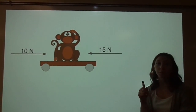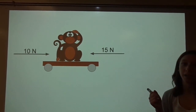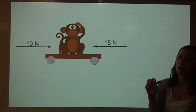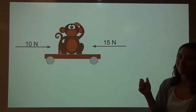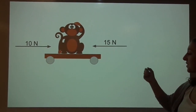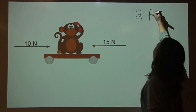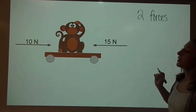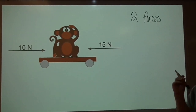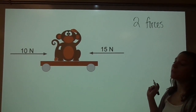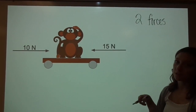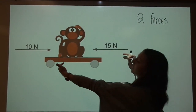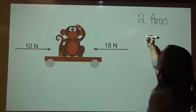Here is another example of a free body diagram. Let's first ask ourselves: how many forces are acting on our monkey car? Hopefully you said two forces. Our next question is: are the forces moving in the same direction or opposite directions? Hopefully you said opposite directions, since these arrows are pointing opposite ways.